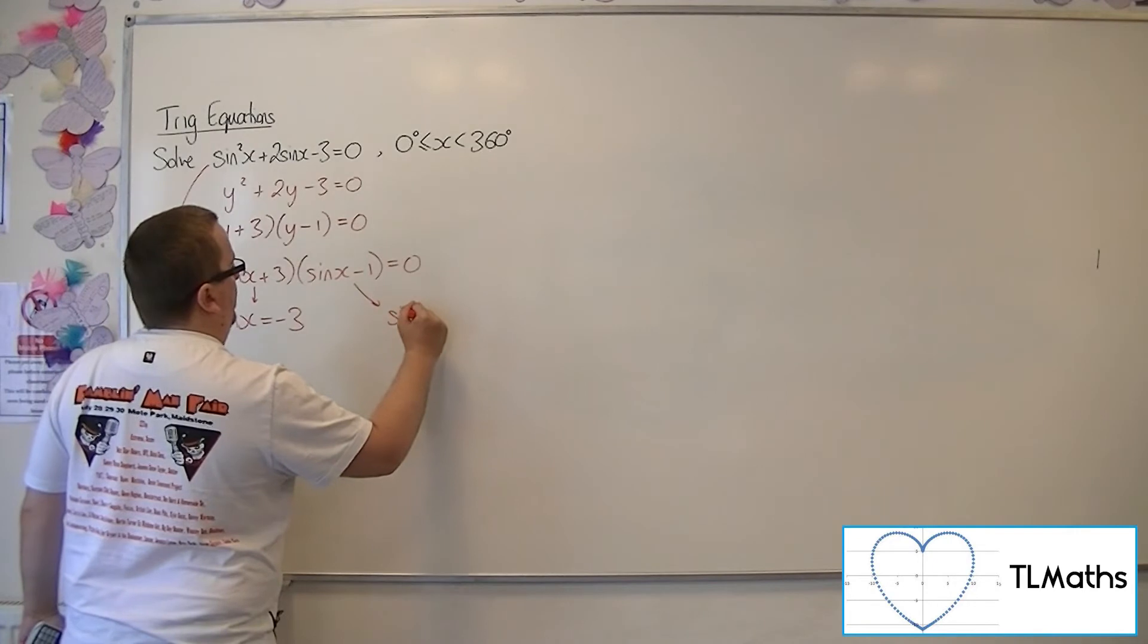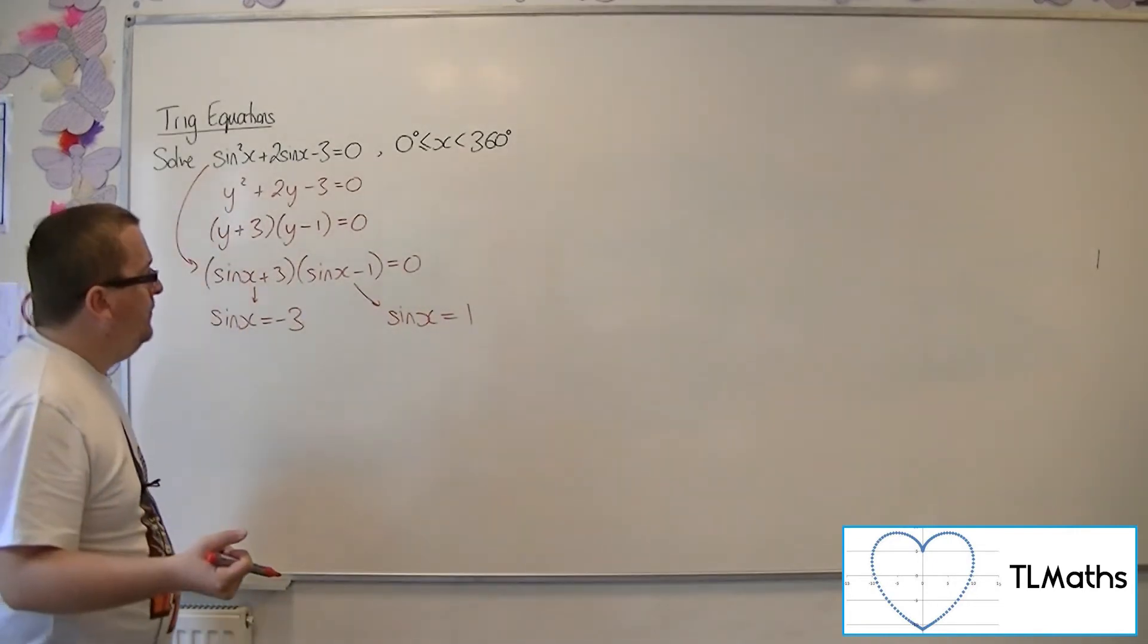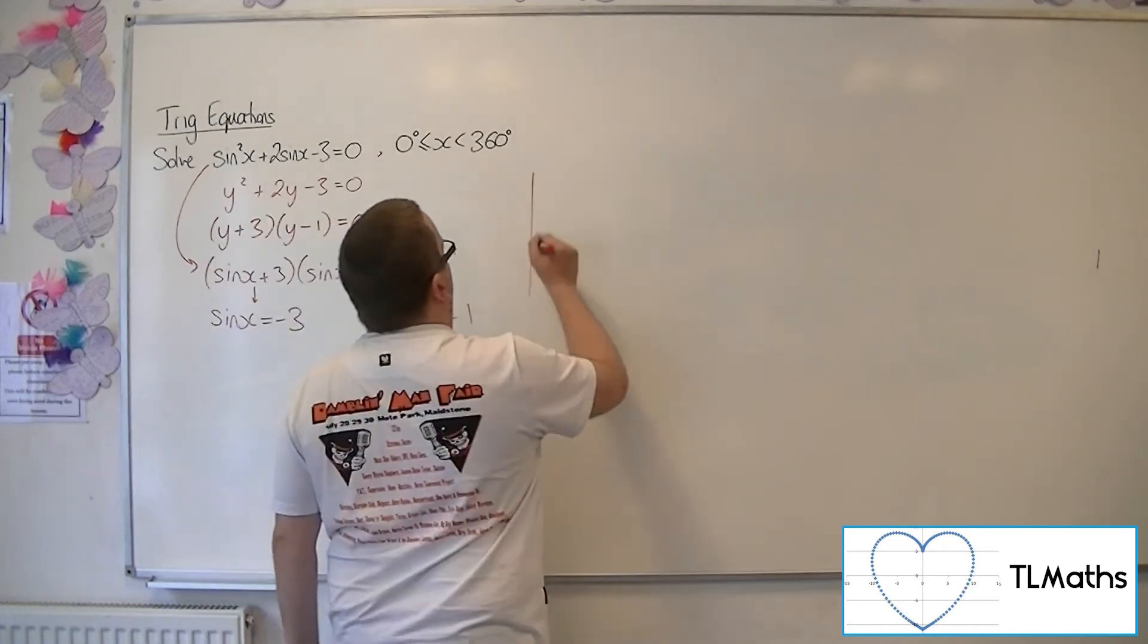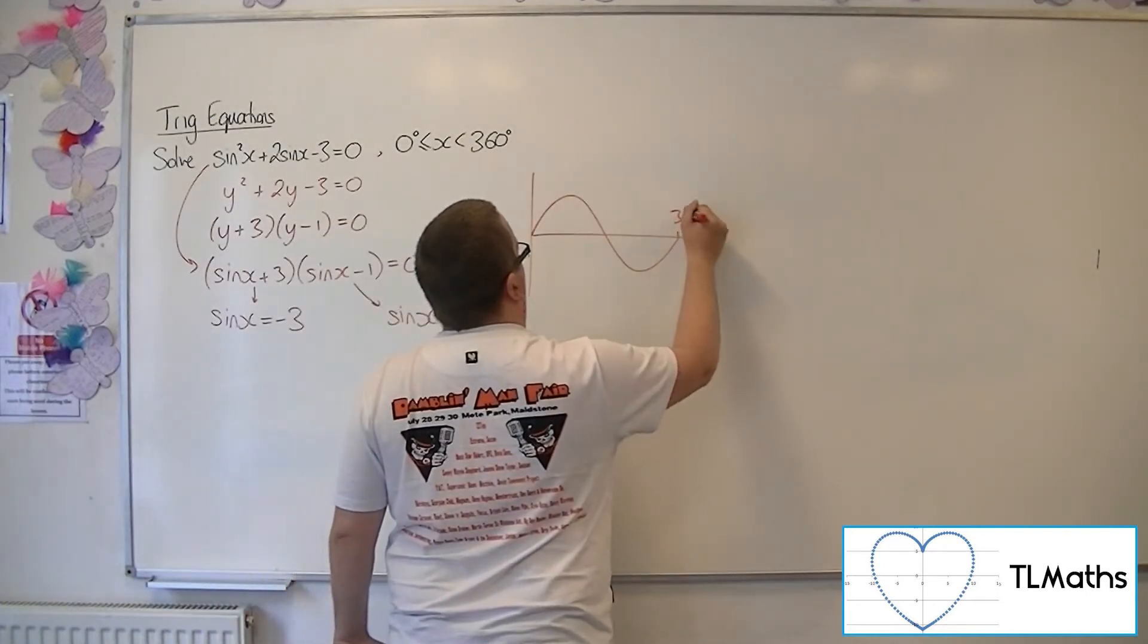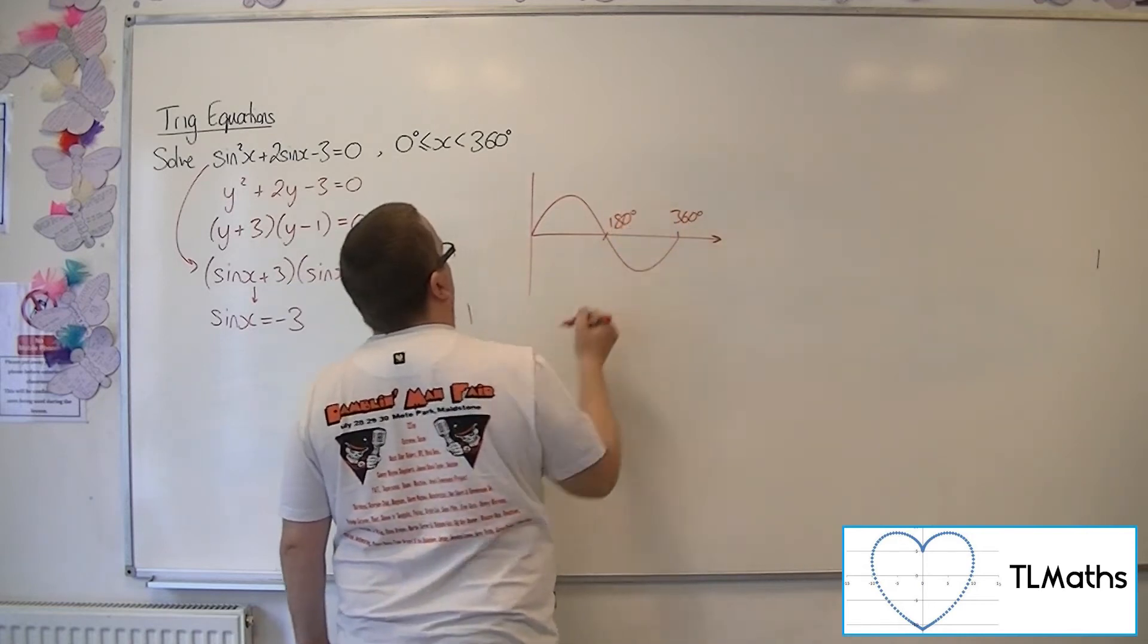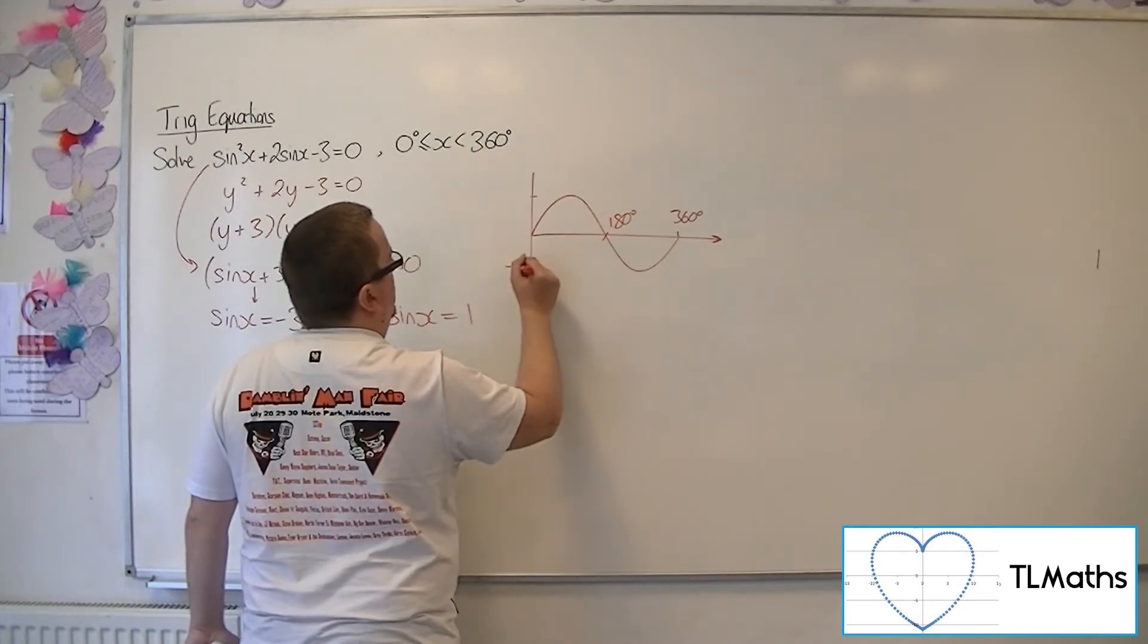So let's sketch sine. Now, sine between 0 and 360 looks like this. Now sine goes between 1 and minus 1.